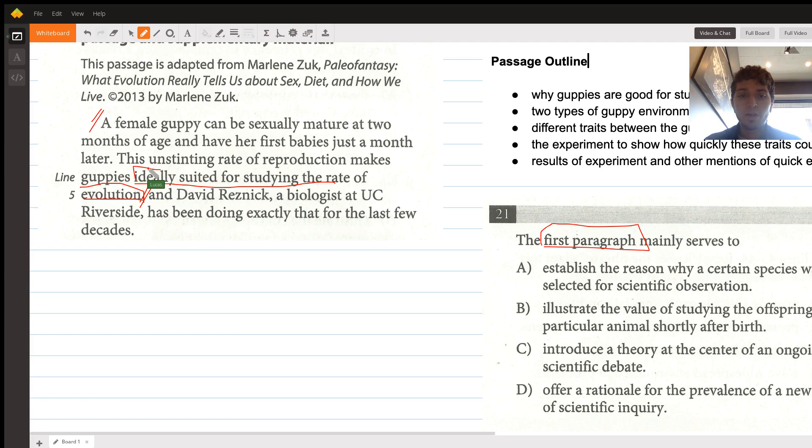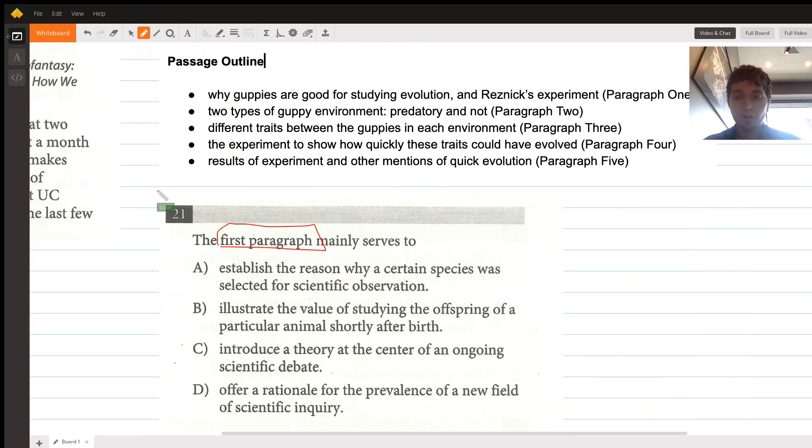In the context of introducing everything, this is setting it up by telling us here's the guppy, here's some things about the guppy, and here's why they're ideally suited for studying the rate of evolution. We should expect our answer choice to probably have something to do with this.